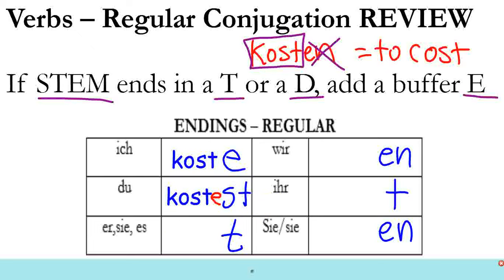Er, sie, es kostet - right, so this would be another one we would add a buffer E. So that's what would happen with kosten and the endings. If it's something else, then we don't have to worry about that buffer E.